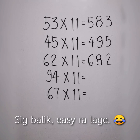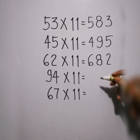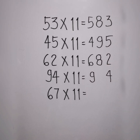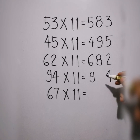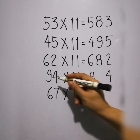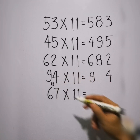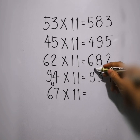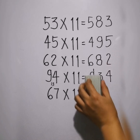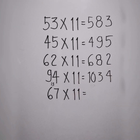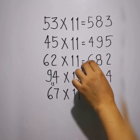So next is 94 times 11. We have 9 and 4. 9 plus 4 is 13. Now we cannot put 13 directly in the middle. So we will put 3 in the middle and carry 1. So 1 plus 9 becomes 10. So the answer is 1034.